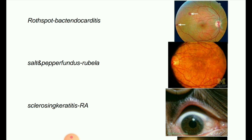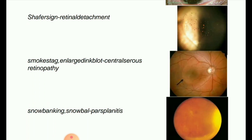Sclerosing keratitis is seen in rheumatoid arthritis. Next image: Schafer sign, which is associated with retinal detachment. Schafer sign, also called tobacco dust sign, refers to the presence of a collection of brown pigmented cells in the anterior vitreous following a posterior vitreous detachment (PVD).